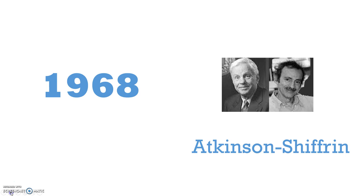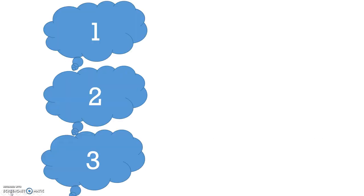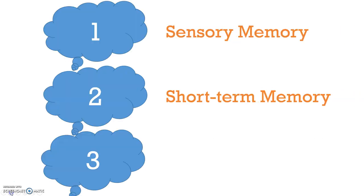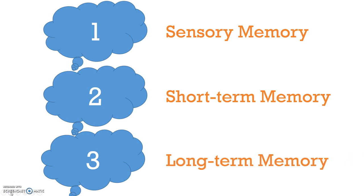They proposed that there are three stages of memory: sensory memory, short-term memory, and long-term memory. We now call this the Atkinson-Shiffrin model.